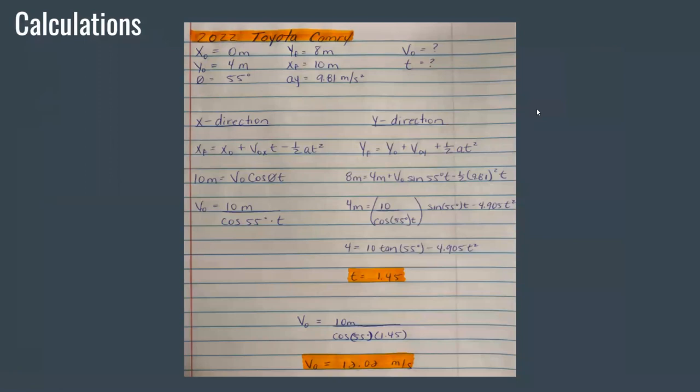The results of my calculations utilizing the 2022 Toyota Camry with an initial height of 4 meters will be the result of time at 1.45 seconds and velocity at 12.2 meters per second.